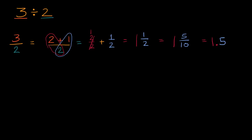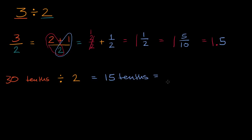Another way we could have thought about this: I'm not getting a whole number when I divide three divided by two, so maybe I'll get something in terms of tenths. Let me express each of these in terms of tenths. Three is 30 tenths, and we'd be dividing by two. So 30 tenths divided by two is equal to 15 tenths, which is equal to 10 tenths and five tenths, or one and five tenths. Both of these are equally legitimate strategies.